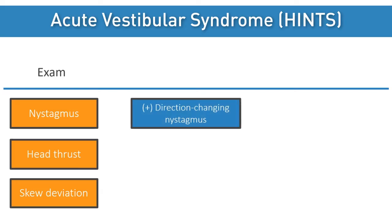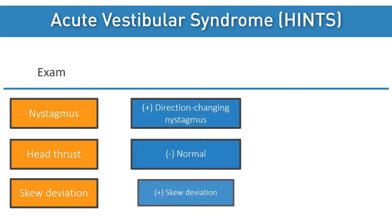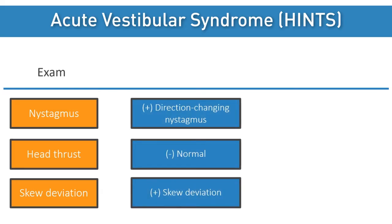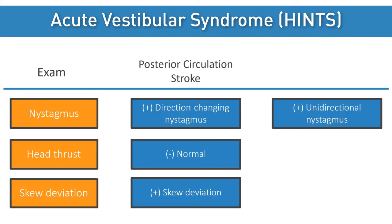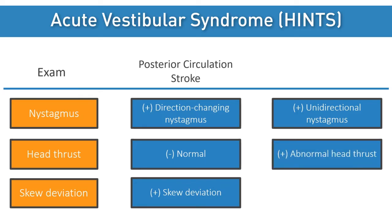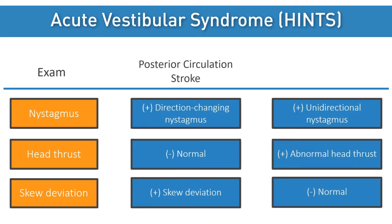If direction-changing nystagmus, a normal head thrust test, or skew deviation is appreciated, this is concerning for a posterior circulation stroke. A unidirectional nystagmus, an abnormal head thrust test, and an absence of skew deviation suggest a peripheral vestibular cause, such as vestibular neuritis, labyrinthitis, or otosclerosis.